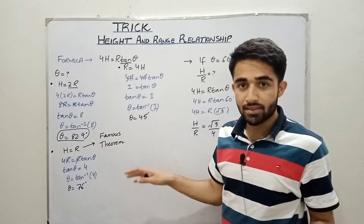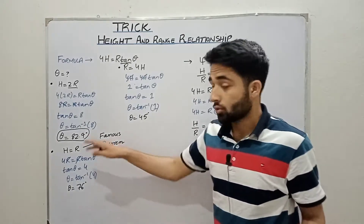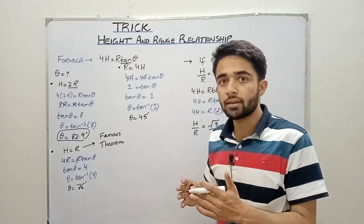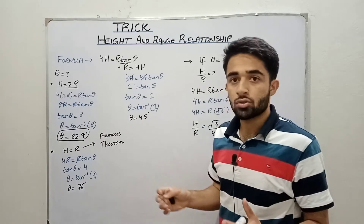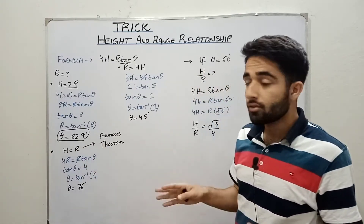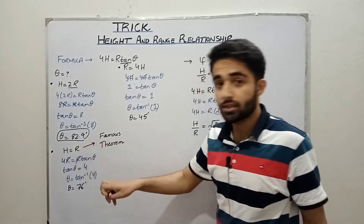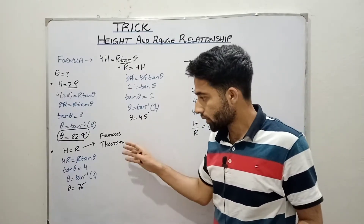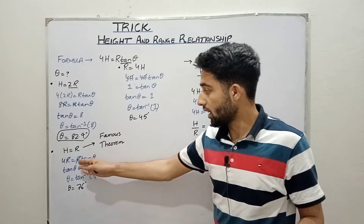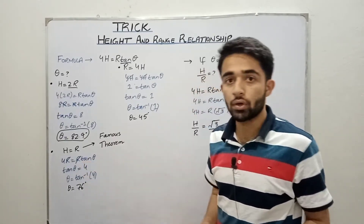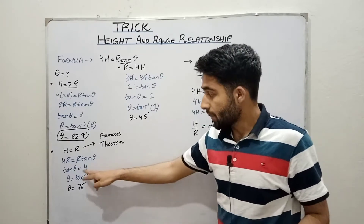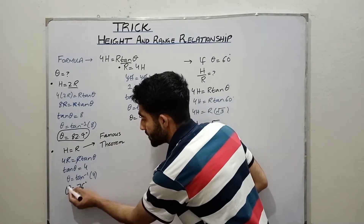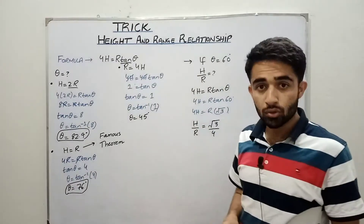The next case is a very famous result: when the height equals the range, at what angle does this occur? We put R in the height position, giving 4R = R·tan(θ). The R cancels on both sides, so tan(θ) = 4. Therefore θ = tan⁻¹(4), which equals 76 degrees.